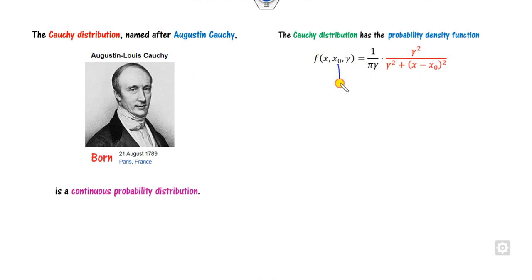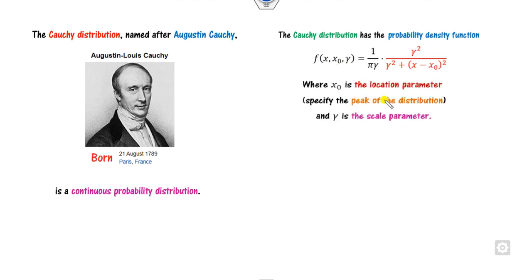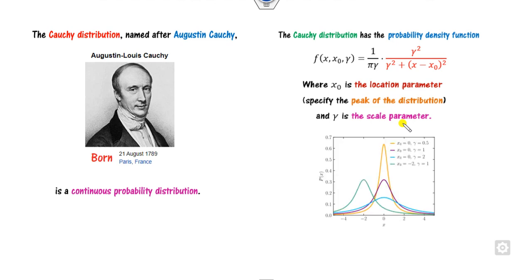This is the probability density function of the Cauchy distribution. There are two unknown parameters: x0 and gamma. Here x0 is defined as the location parameter, also called the shape parameter, defined as the peak of the distribution. Gamma is called the scale parameter.